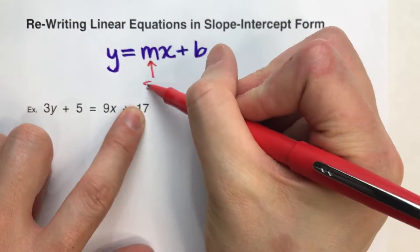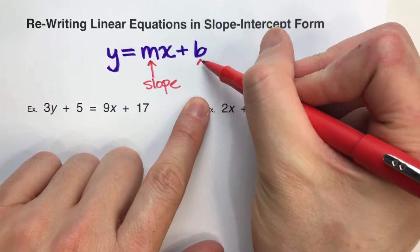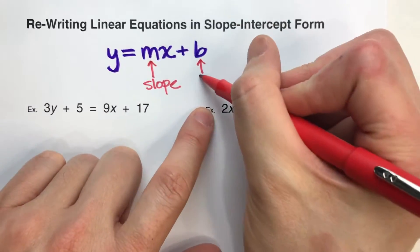The m stands for the slope, so it's the number next to the x, and the number on the end here without the x next to it, there's your y-intercept.